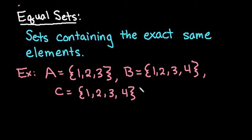So down here I have three sets written out. Set A is the numbers 1, 2, 3. B is the set of numbers 1, 2, 3, 4, and C is the set of numbers 1, 2, 3, 4.